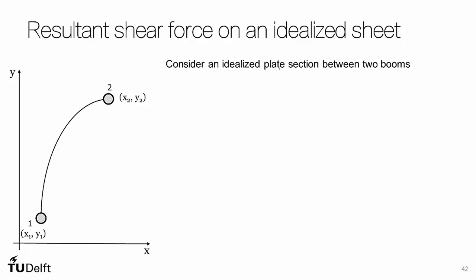This is an idealized plate section, and because it's idealized we know that the Q12 value shown here is constant, and this is a result of our idealization. We moved all of the area of our sheet to the two booms.